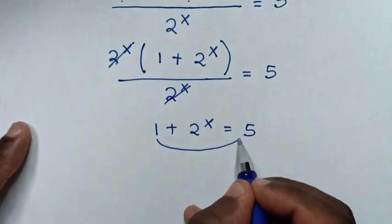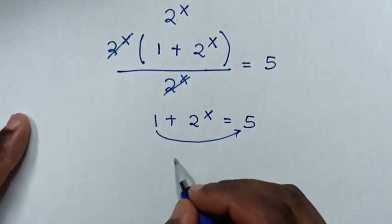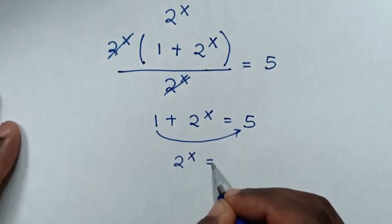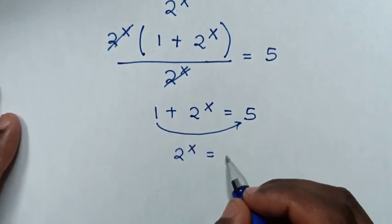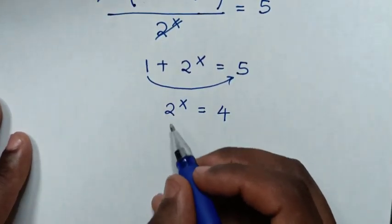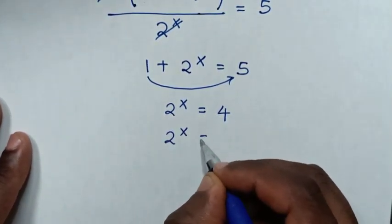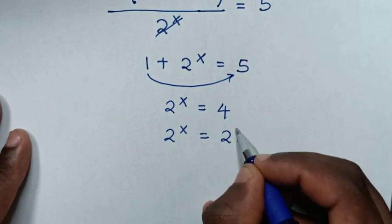Then we take 1 to the right side, so it will be this 2 power of x is equal to 5 minus 1 is 4. Then it will be 2 power of x is equal to 4, which is same as 2 power of 2.